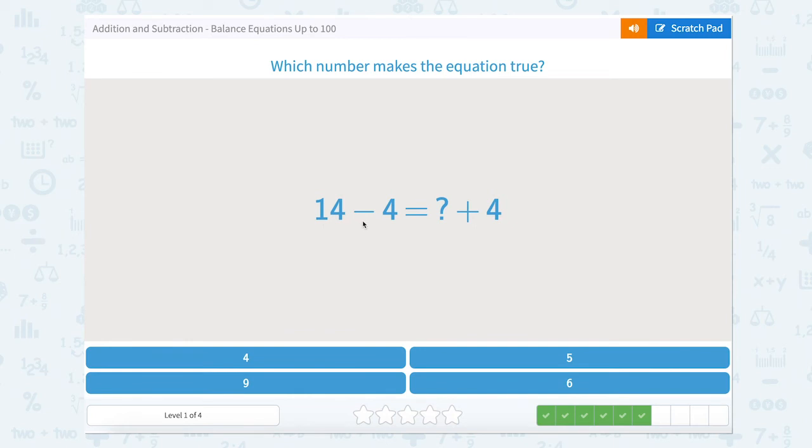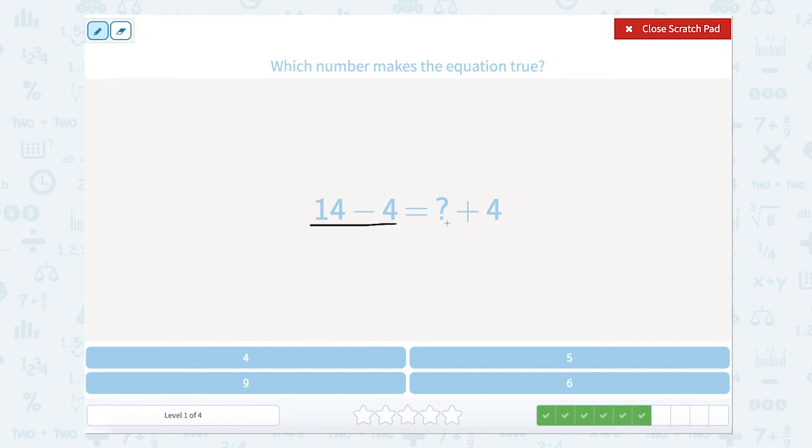Now 14 minus 4 equals something plus 4. So let's use our scratch pad. We see our two sides of the equal sign here. Let's solve for the side that has two numbers. So 14 minus 4 equals 10.